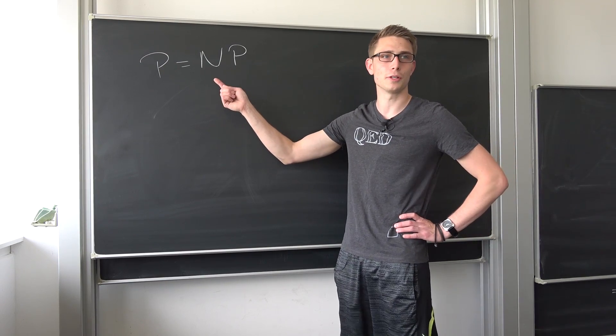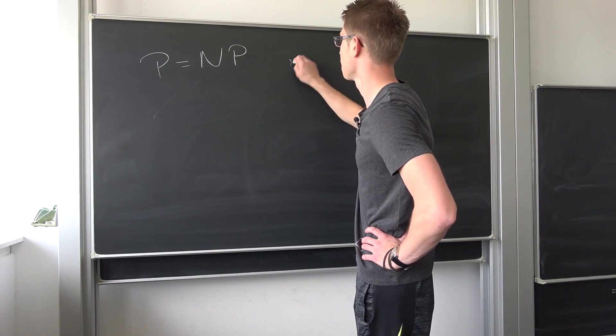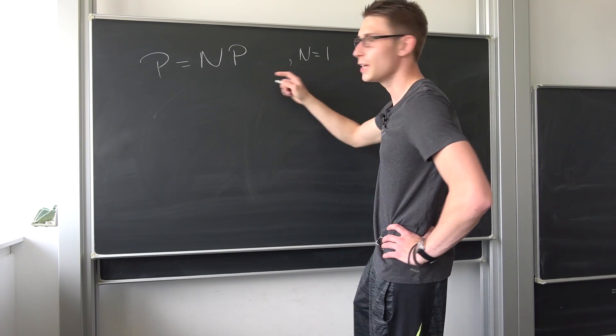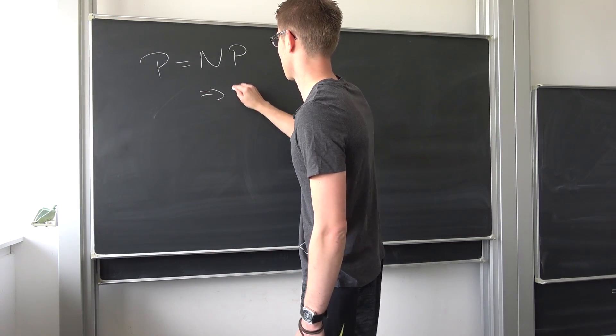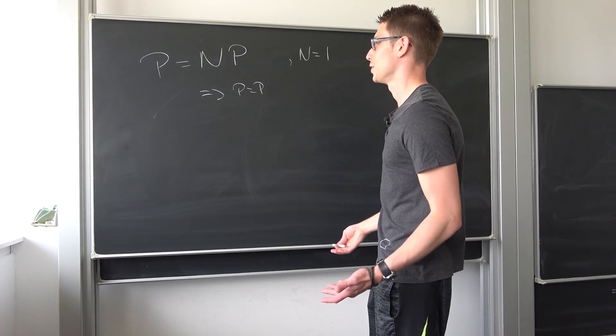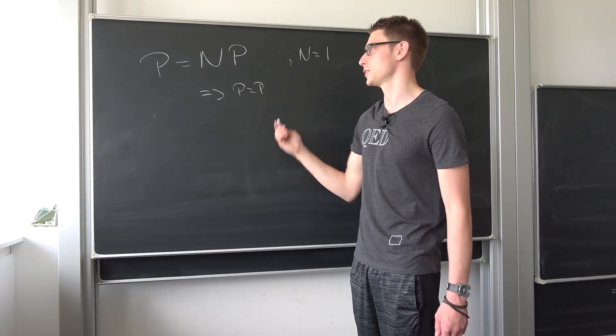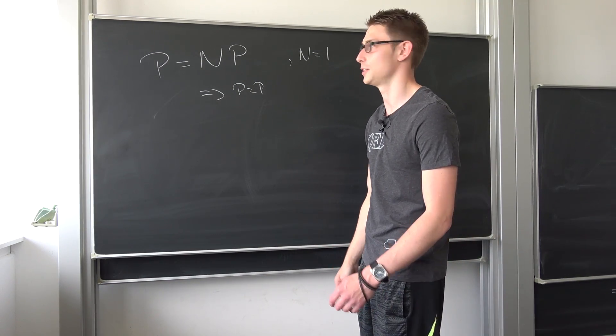Yeah, basically for small values of n, really small values of n, let's say n is equal to one. Well, this thing definitely holds, okay? P equals to P. I really don't know what the fuss is all about on this problem right here. Why the fuck are you going to get one million dollars for this triviality? Oh goodness.